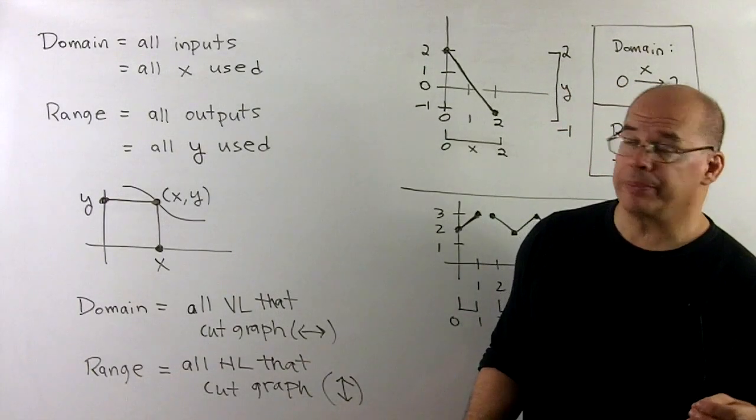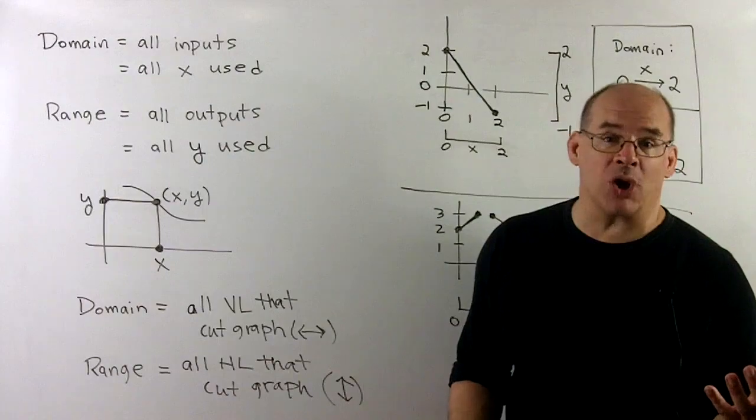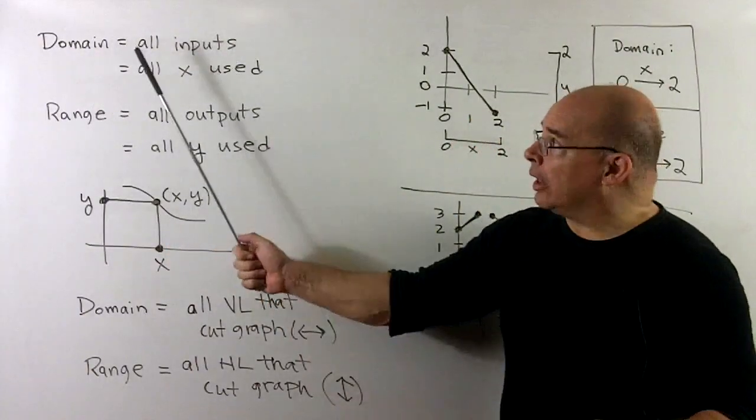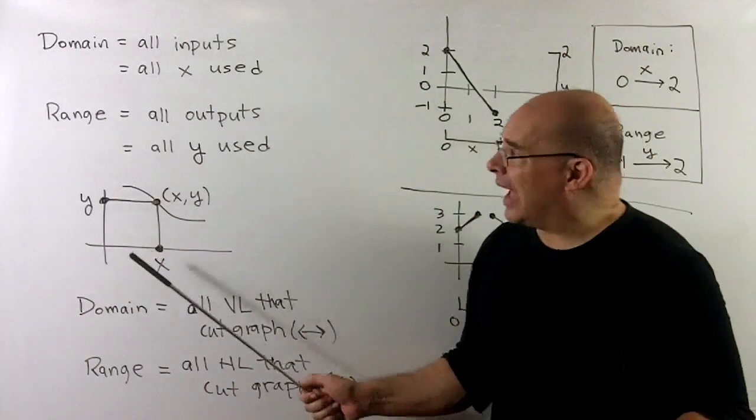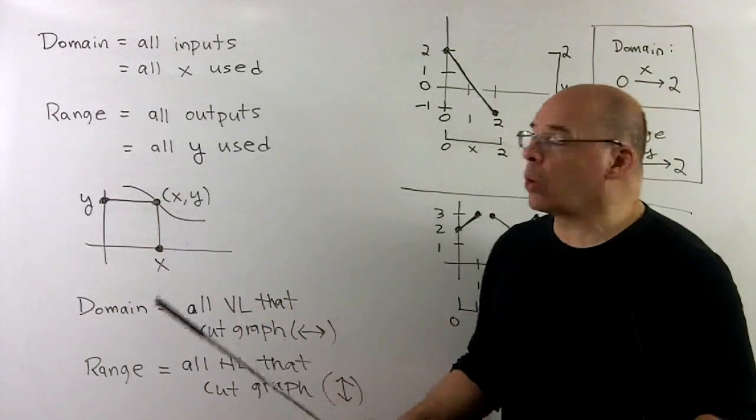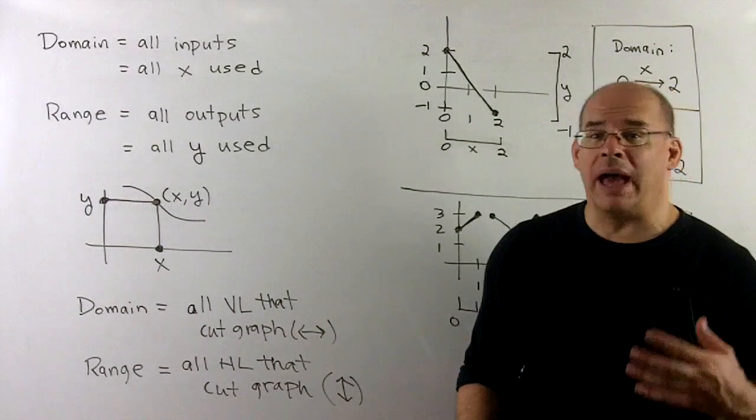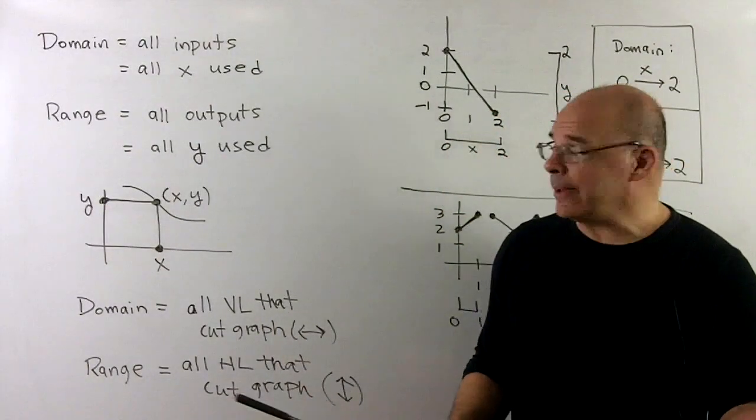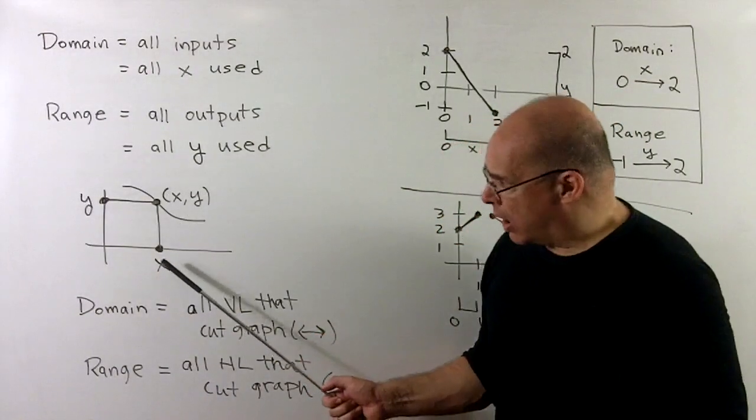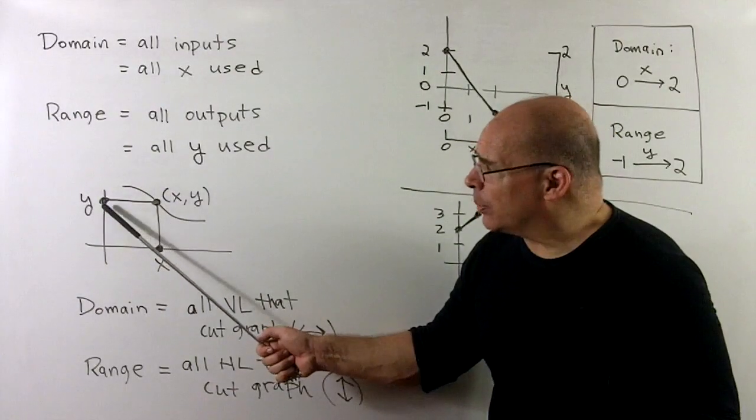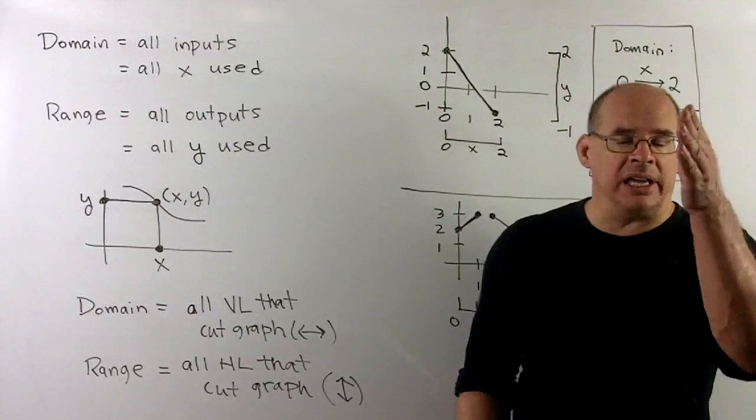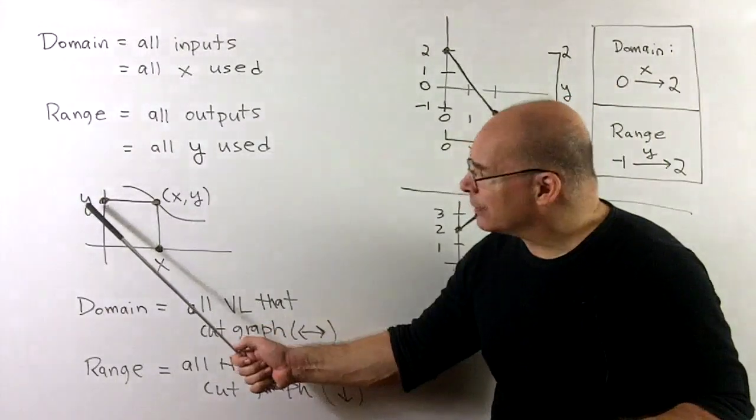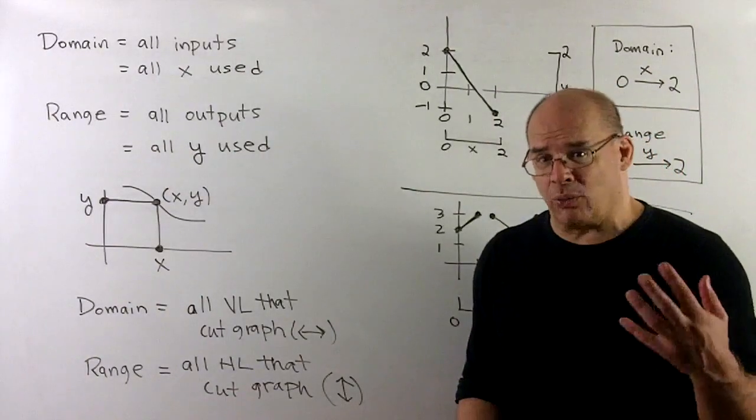Finally, we come to domain and range. The domain and range summarize all the x and y values that actually get used by your function. For domain, that's just going to be all inputs used or all x used. And for the range, that's going to be all outputs or all y values that are used. Now, how do we get these from the graph? If I have my graph, I pick a random point and just call it x comma y. The x corresponds to a point on the x axis. The y corresponds to a point on the y axis. And I get to each just by moving along a vertical line for the x's, a horizontal line for the y's.